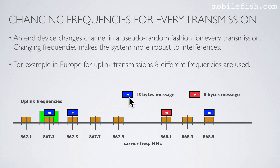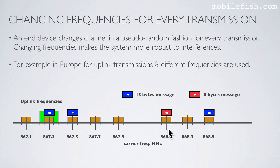Let's assume this blue block represents a 15-byte message and this red block represents an 8-byte message. For example, this message is first transmitted at this frequency; then after one minute it transmits another message at this frequency; then again after a minute it transmits this message at this frequency; and then again it transmits this message at another frequency. As you can see, after every transmission it hops to another frequency — changing frequencies makes the system more robust to interference.